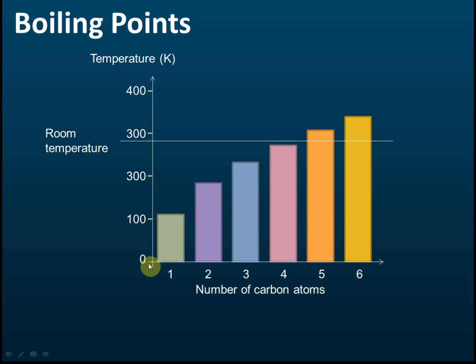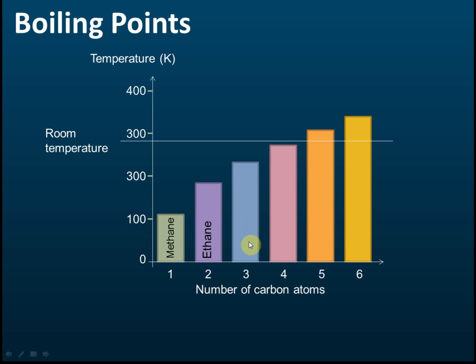The alkane with one carbon atom is called methane. The alkane with two carbon atoms is ethane, three carbons is propane, four carbons is butane, five carbons is pentane, and six carbons is hexane.